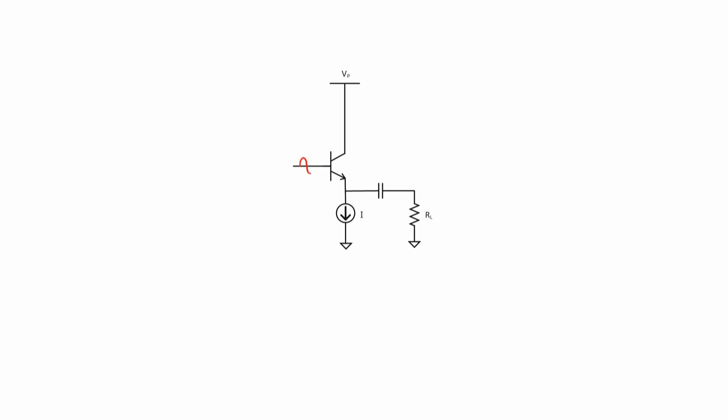The reason that happens is because of the current divider I just pointed out, but there's a way around this problem. If we replace resistor R sub E with a current source, then all of the AC current coming through the transistor will go to the load resistor. That's one of the advantages of using current source biasing. Let me show you how it works. In this case, we'll again have some signal showing up at the base, and if everything is biased correctly, that signal should show up at the emitter.